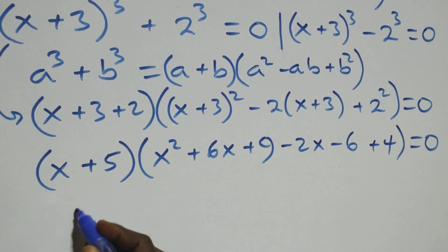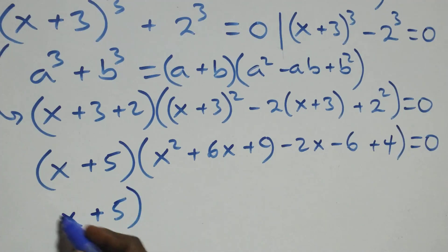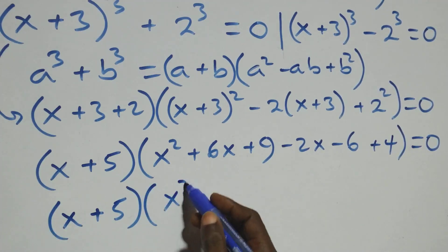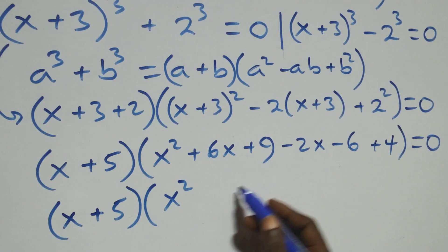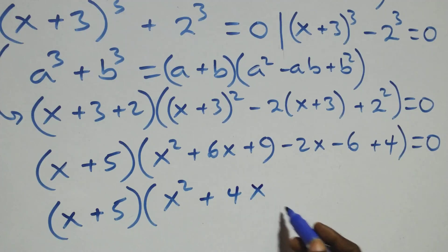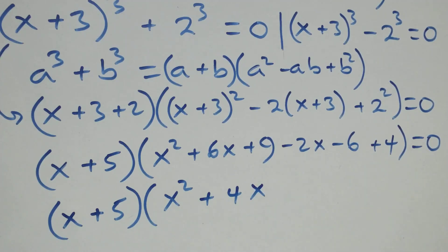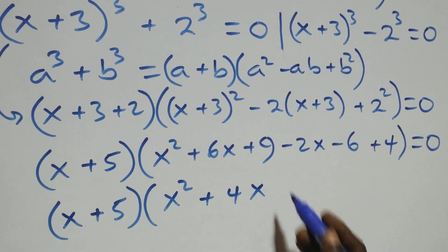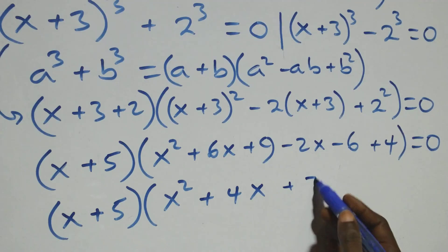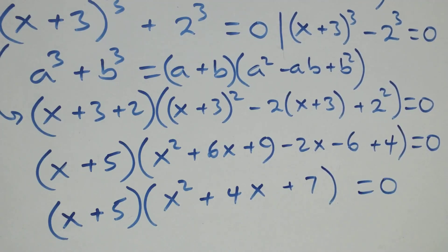Then this becomes (x plus 5), into brackets, open brackets, here we have x squared, and 6x minus 2x that is plus 4x, then 9 minus 6 plus 4 that is plus 7, close bracket, equals to 0 here.